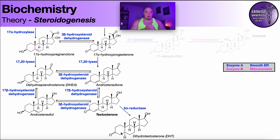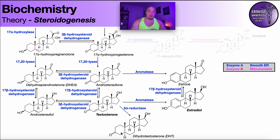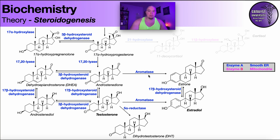Testosterone is also required to make estrogens. Estrogen is a class of molecules, not a single molecule. The enzyme aromatase is responsible for committing these molecules to the estrogen pathway. Males have a little aromatase and make small amounts of estrogens, but biological females have significantly higher aromatase amount and activity. A significant percentage of androstenedione and testosterone in females is converted to estrogen derivatives via aromatase.